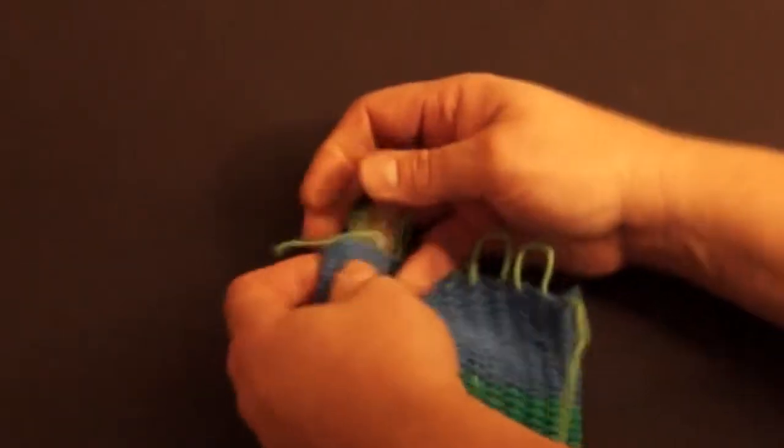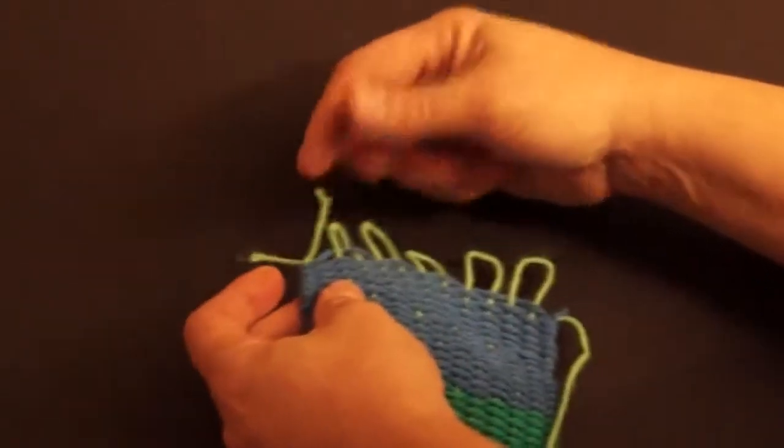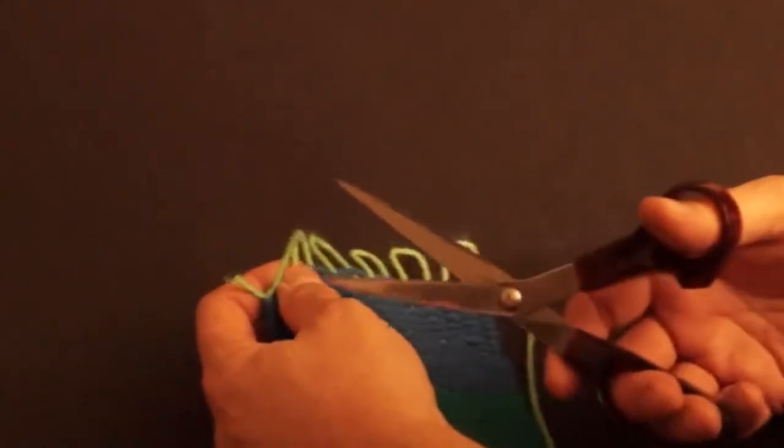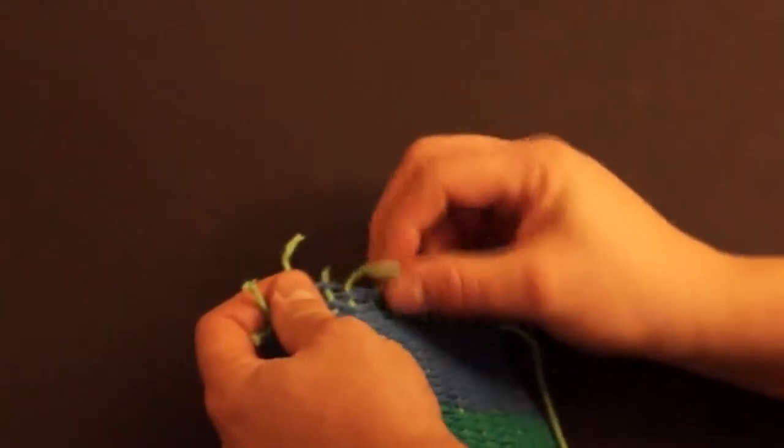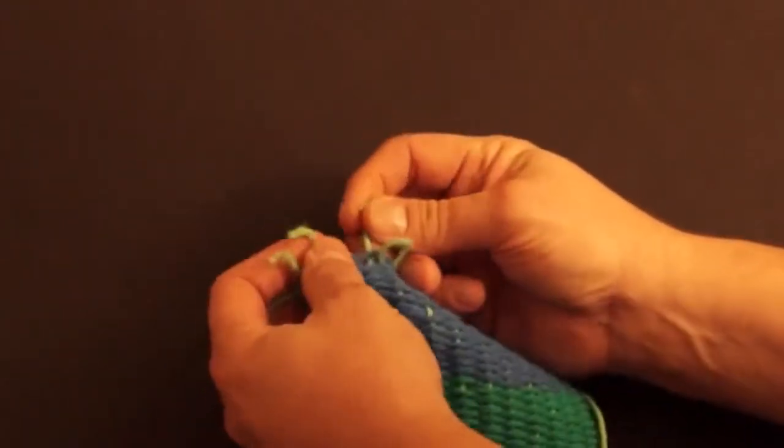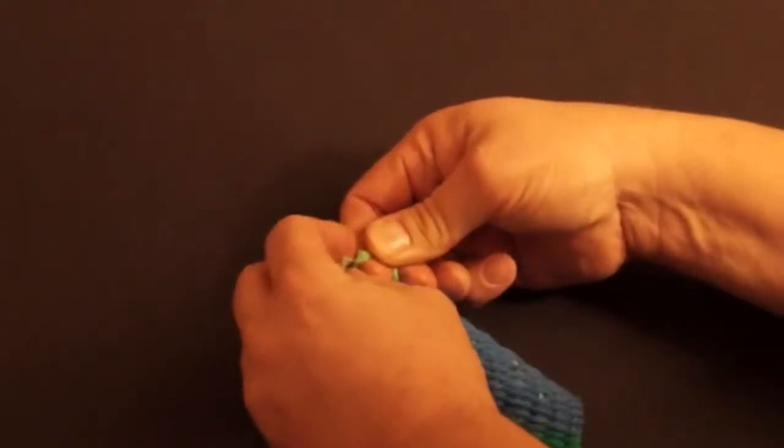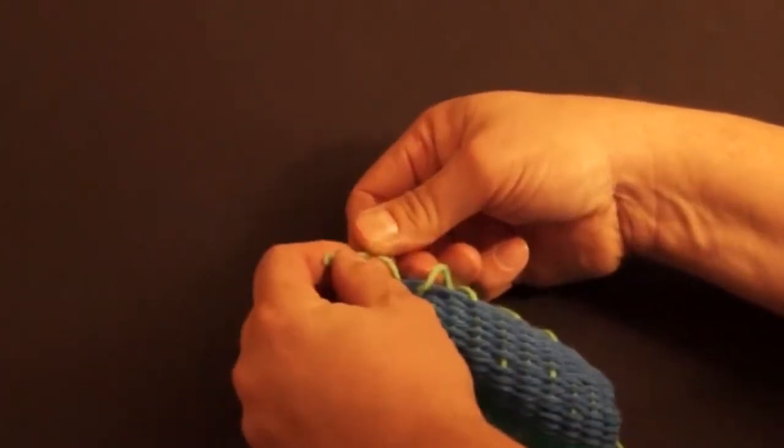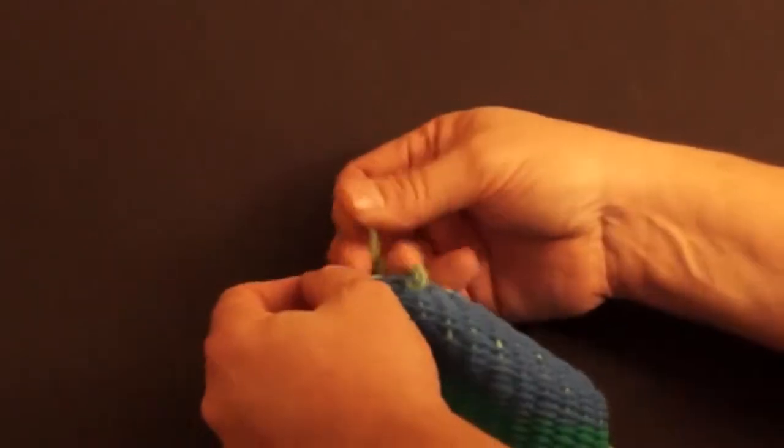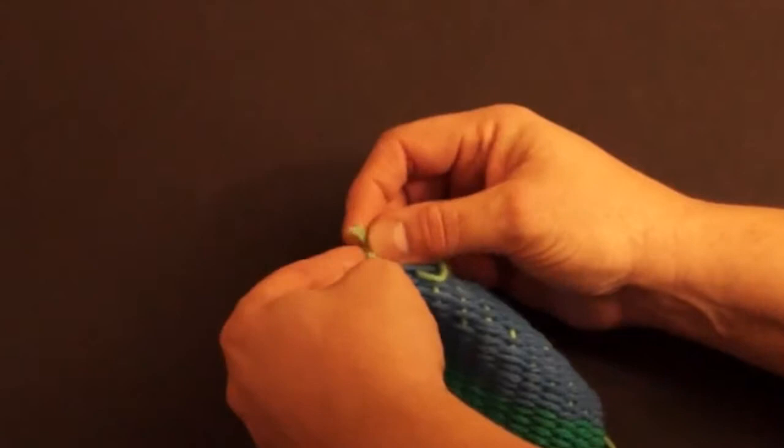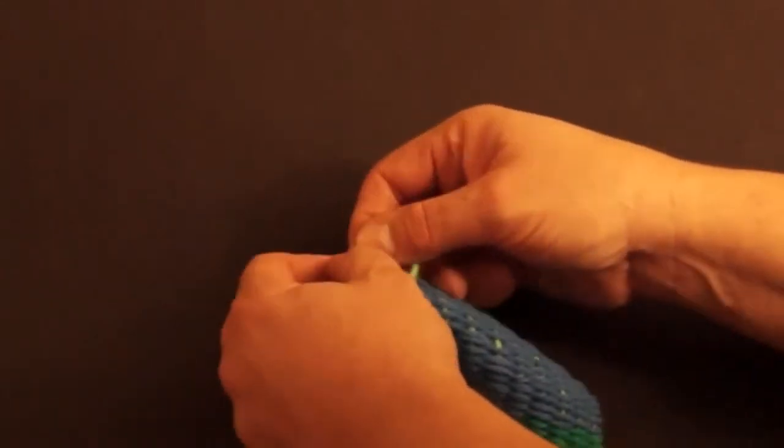So, there it is. You can do that to each one of these all the way across. Let me just do a couple more so you can see the process again. I cut the loop and then I take one end, wrap it around the other, pull it snug, and then I do that again.